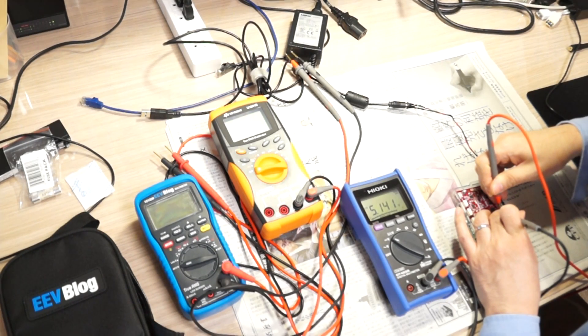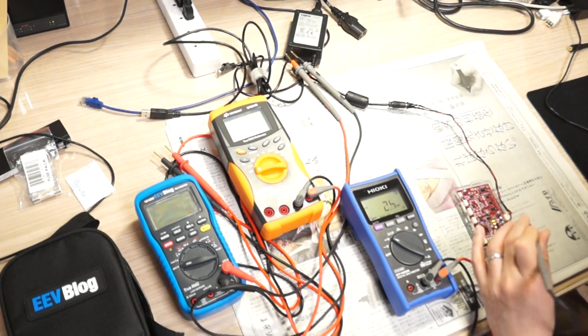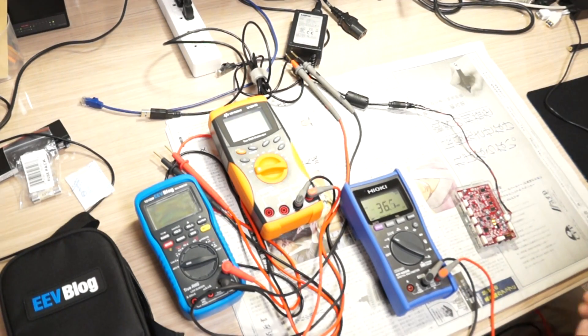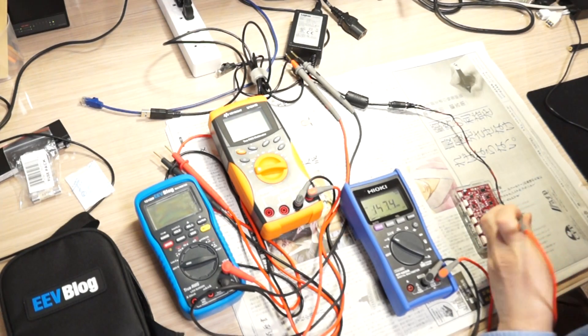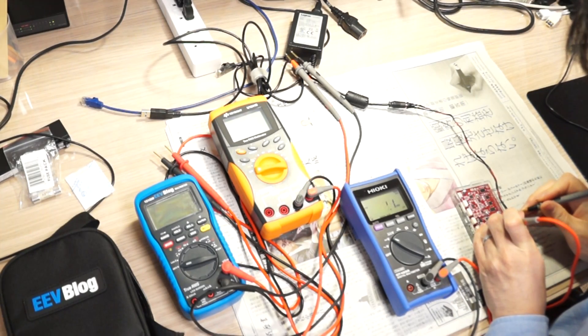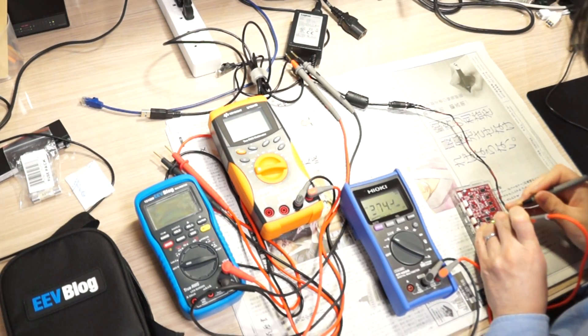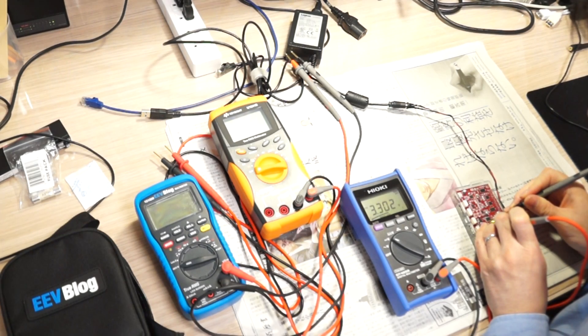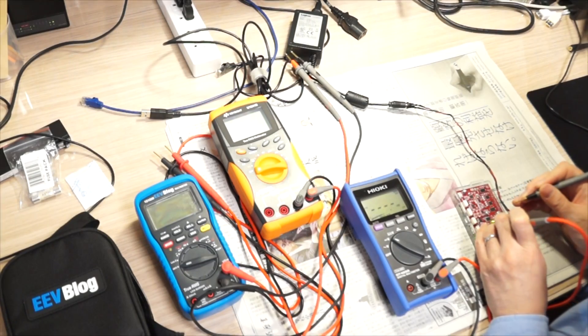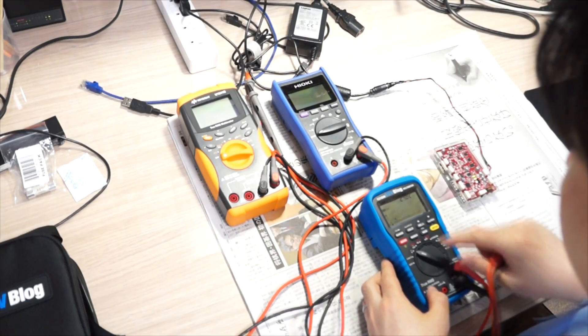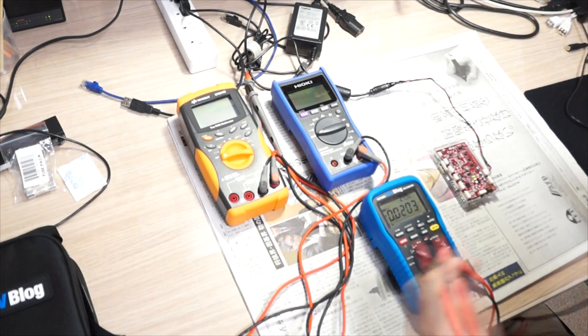5.141. Again, 5.141. Okay. And next is 3.3 rail. Okay, this is 3.3. 3.302. Again, 3.302. Again, 3.302.